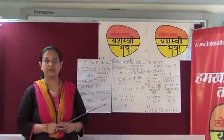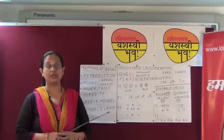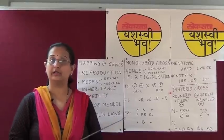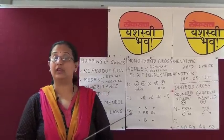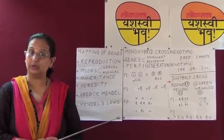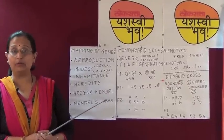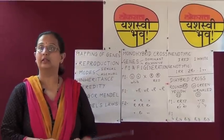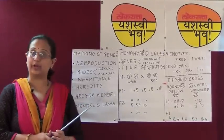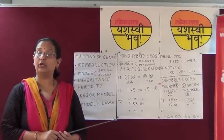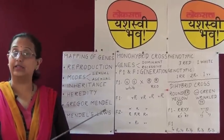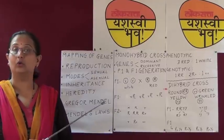In the last session we studied about reproduction, the various reproductive organs in males and females. The ability to produce young ones of its own kind is called reproduction. We also studied about the modes of reproduction — sexual and asexual. In sexual reproduction, with involvement of two gametes, the chances of variation are more, whereas in asexual reproduction, since only one gamete is involved, the chances of variation are very less — more or less no variation.